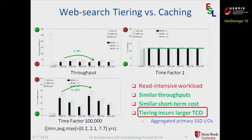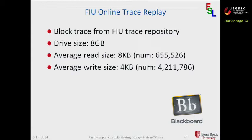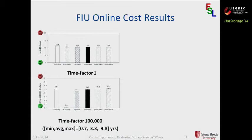We also have the FIU online trace replay. This is a block trace from the FIU trace repository. The drive size is configured to be 8 GB to meet the storage requirement. Average read size is 8 KB; average write size is 4 KB. This is a write-intensive workload. Let's focus on the tiering cost result before we look into the more complete results. We have two figures here: one short-term cost figure and one long-term cost figure. For this long-term cost figure, it is translated to 3.3 years on average for all conditions.